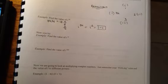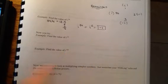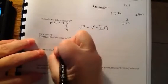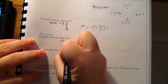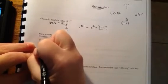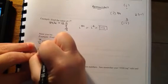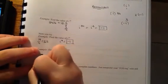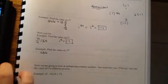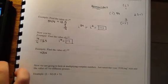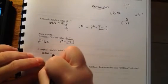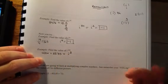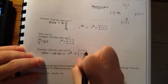Now pause the video and see if your answers for i to the 14th and i to the 103rd power match. When you divide 14 by 4, you get 3.5. The remainder is 0.5, so we know this is equal to negative 1. We'll do the same thing for the next one. 103 divided by 4 is 25.75, which means this is the same thing as saying i to the 3rd, and i to the 3rd is negative i.